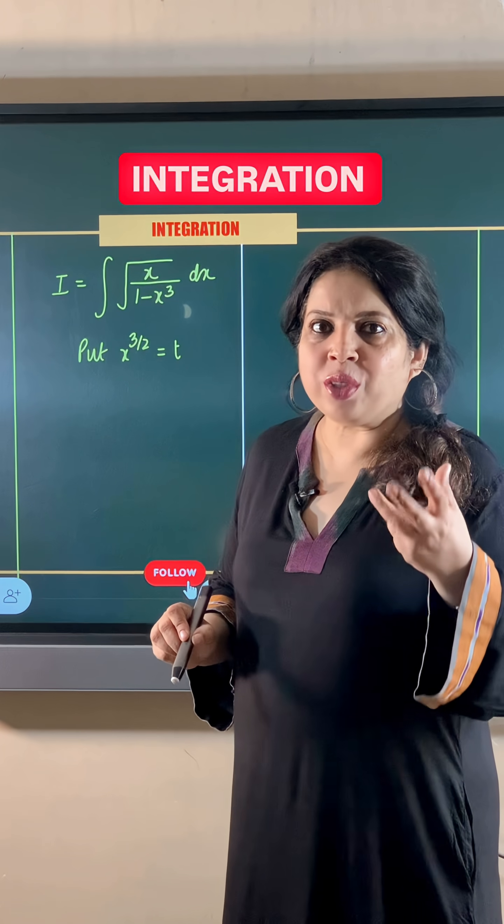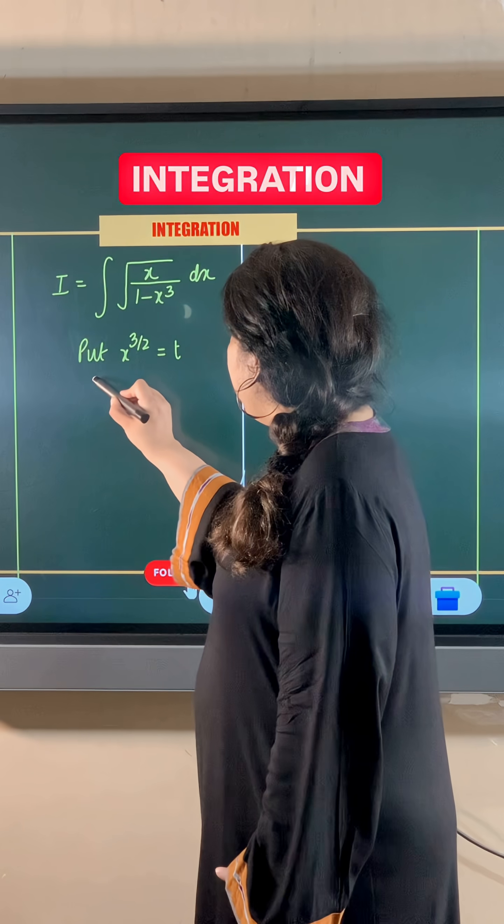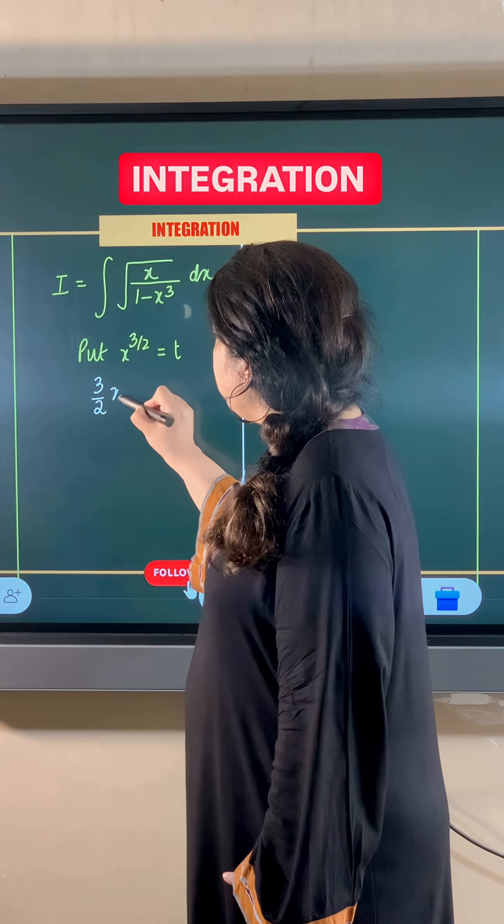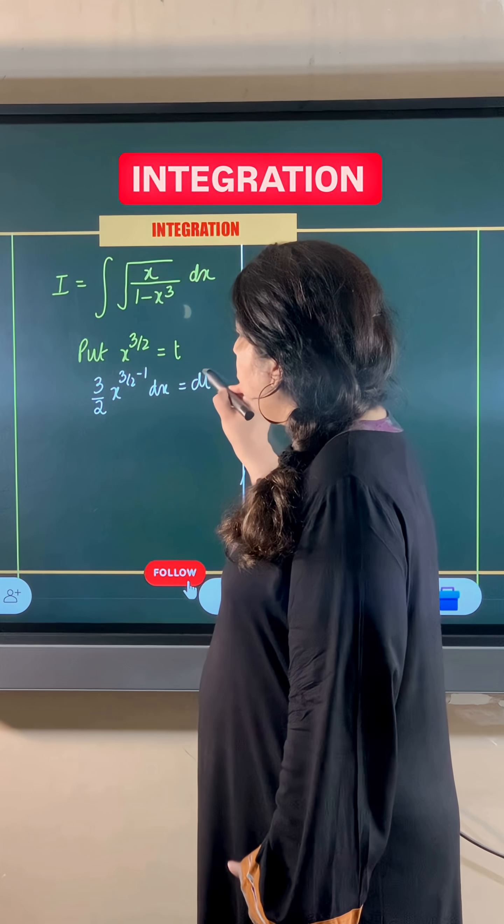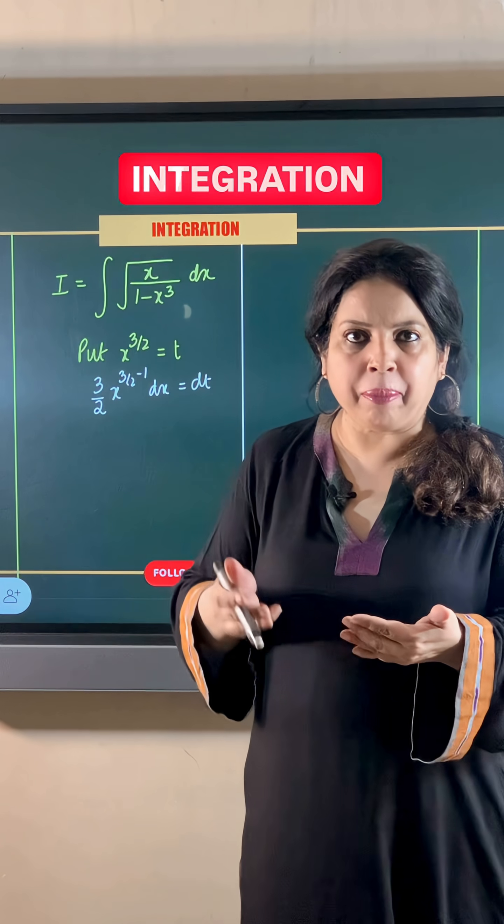So when we differentiate both sides with respect to x, I am getting 3 by 2 x to the power 3 by 2 minus 1 dx is equal to dt. Now 3 by 2 minus 1 is 1 by 2.